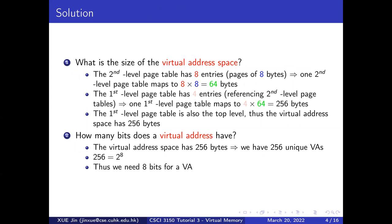For the first question — the size of the virtual address space — because we have two levels of page tables, we start from the second level. The second-level page table has 8 entries, and each entry directly points to a physical page of 8 bytes, so one second-level page table maps to 8 × 8 = 64 bytes. The first-level page table has 4 entries, and each first-level entry maps to a second-level page table. So one first-level page table maps to 4 × 64 = 256 bytes.